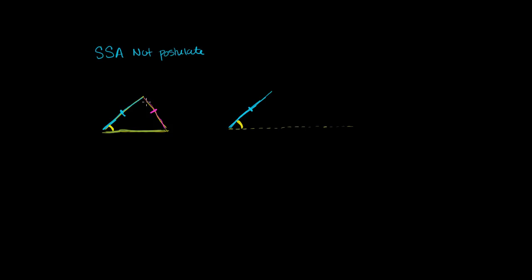Now we have this magenta side — another side that's congruent. So this thing could pivot over here. We know nothing about this angle, so it could form any angle, but it does have to get to the other side. One possibility is that the triangles are congruent, so maybe this side goes down just like that, in which case we actually would have congruent triangles. But the reason why SSA isn't valid is that this side could also come down a different way. There are two ways to get down to this base, and so that's why SSA by itself, with no other information, is ambiguous — it does not give you enough information to say that those triangles are definitely the same.